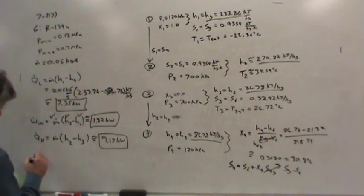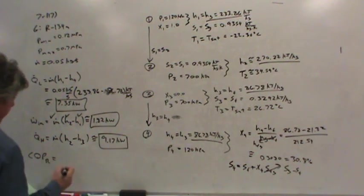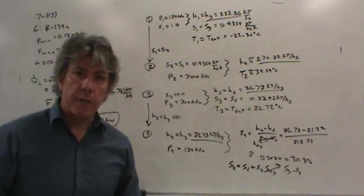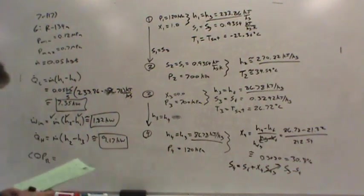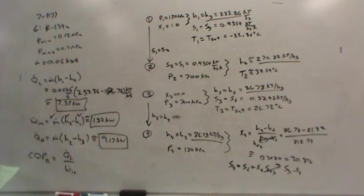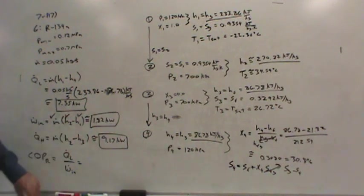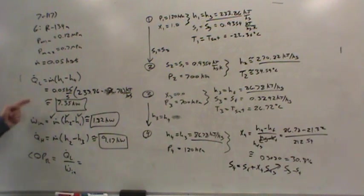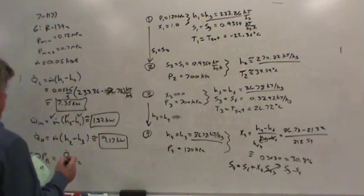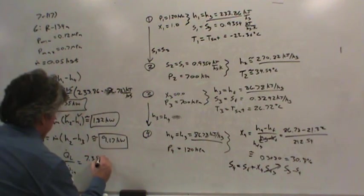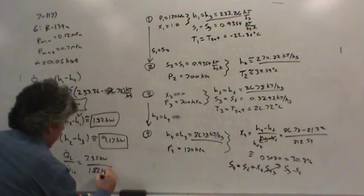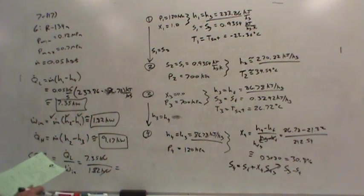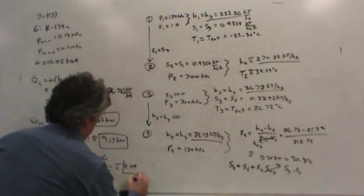The last thing they asked for was the coefficient of performance. The goal is that this be a refrigeration unit trying to cool a cold space. The coefficient of performance is what we get out of it over what we put into it. Q dot L is 7.35 kilowatts, W dot net is 1.82 kilowatts. The units cancel, and it's about 4.04.